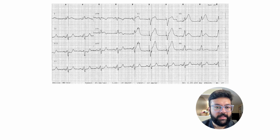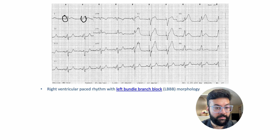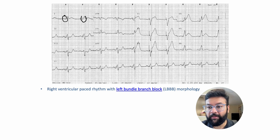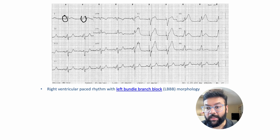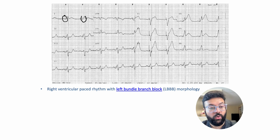Next case — yes, there is a bundle branch, and you can also see pacemaker spikes, so this is a right ventricular paced rhythm with left bundle branch. If you see an EKG where the patient has new onset left bundle branch, that is already diagnostic of ischemia. New onset left bundle branch is a STEMI equivalent.